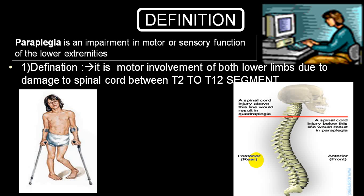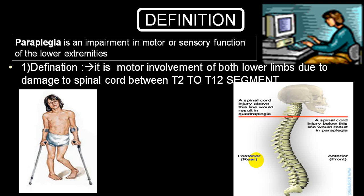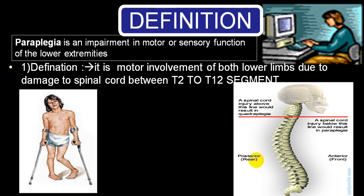Paraplegia is an impairment of motor dysfunction in both lower extremities. It may be with or without sensory involvement. It is due to two common mechanisms: either damage to the brain — called cerebral paraplegia — or damage to the spinal cord — called spinal paraplegia. In the spinal cord, the damage must be between T2 and T12 segments to result in paraplegia.